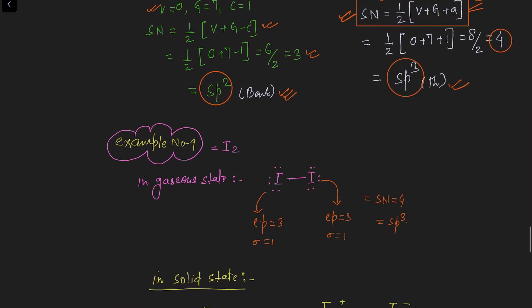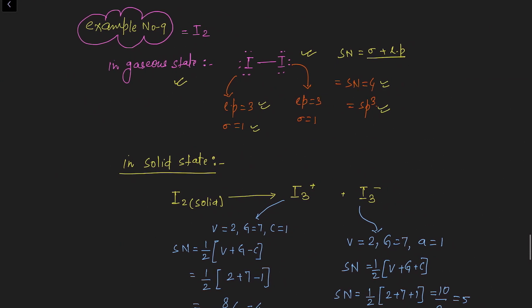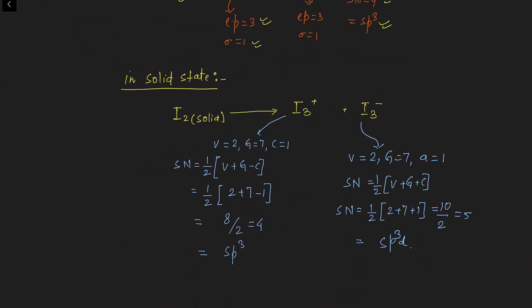Example nine: I2 (iodine). In gaseous state, iodine has three lone pairs and one sigma bond per iodine atom, so steric number = 4 and each iodine is sp3 hybridized. In solid state, iodine consists of two different ion types: I3+ (cation) and I3− (anion). In each of these, one iodine acts as the central atom and the other two are surrounding atoms.